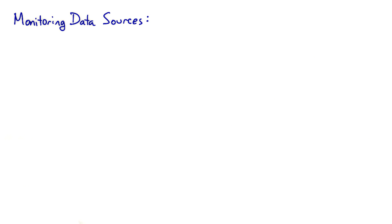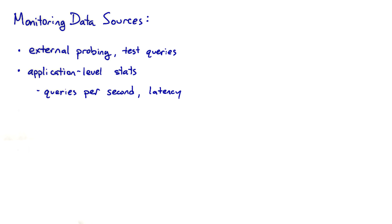There are a few different ways that we can gather data about our services, though not all of them apply to all services. One is external probing, or sending test queries — some outside system will send queries into our system and see if it performs as expected and record the results. Another is application-level metrics exported by monitoring interfaces of our serving processes, such as the number of queries handled per second or what the latency is. Those can be pushed into a monitoring system or pulled into it from the server.